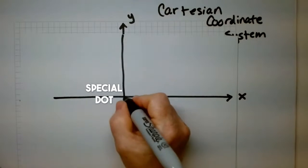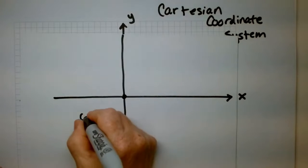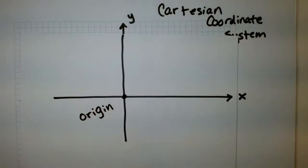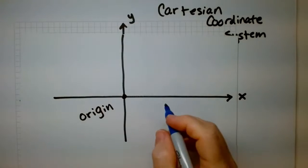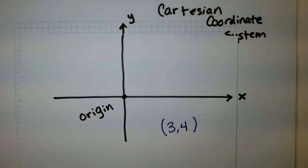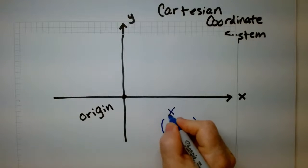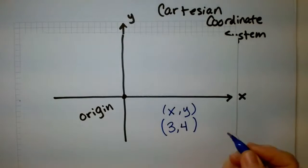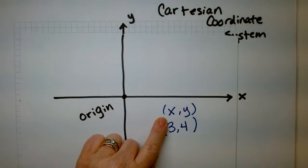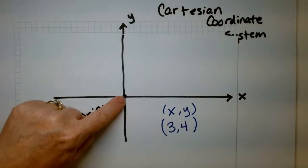This is a special dot right here — this is called the origin, O-R-I-G-I-N. That's the place where the axes cross. If I give you the coordinate points 3 comma 4, this is x and this is y, and this is important. The hardest part about graphing coordinates is remembering which one comes first.